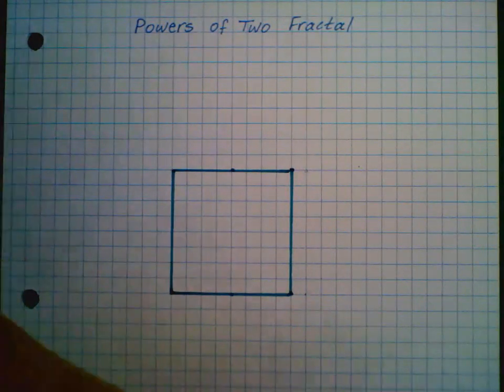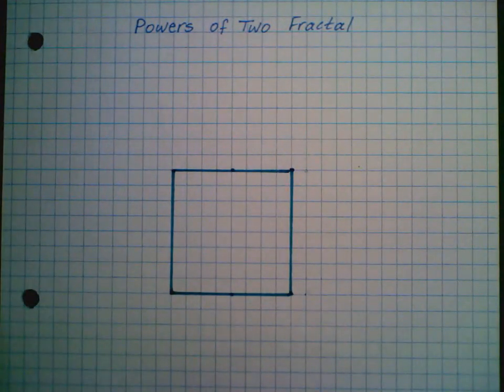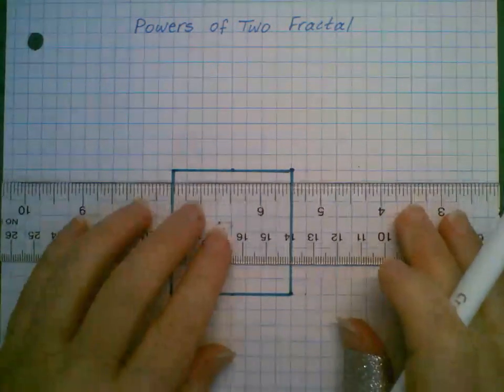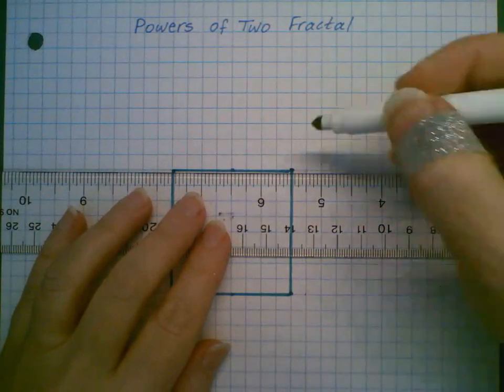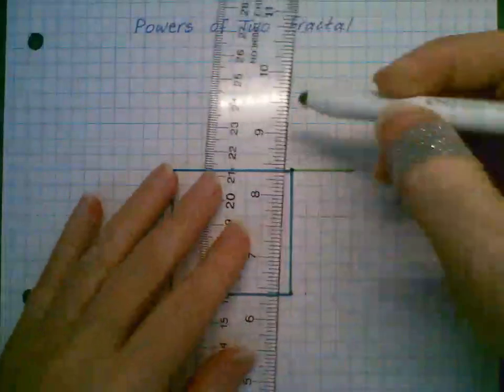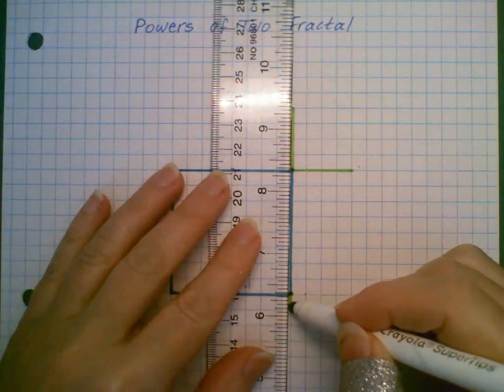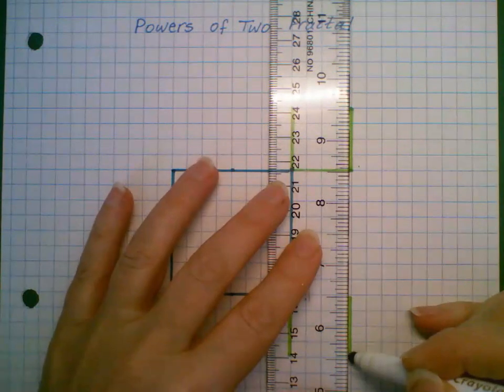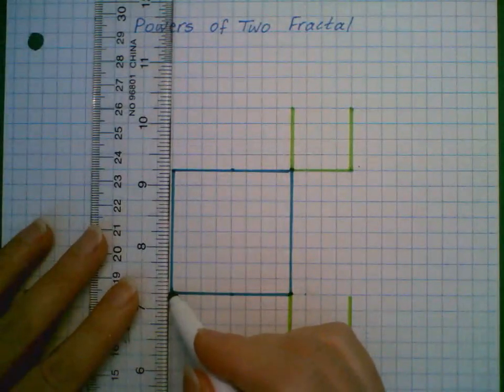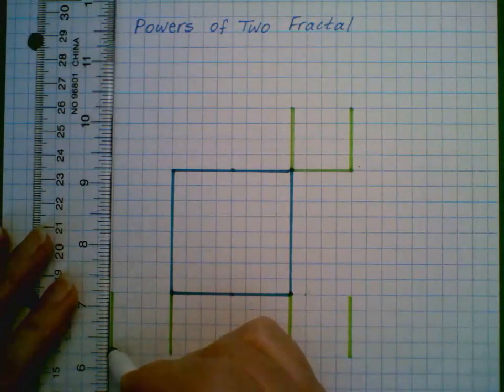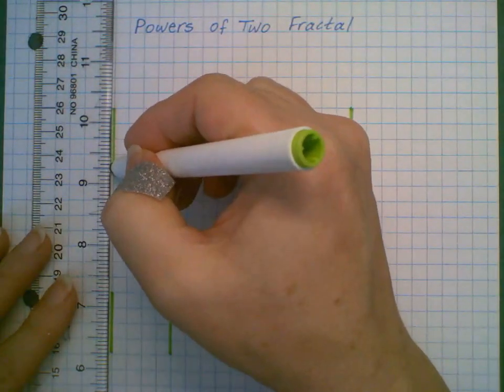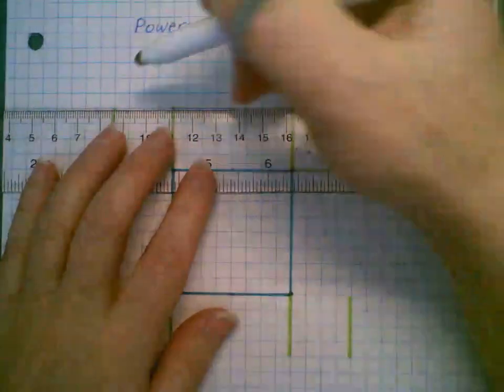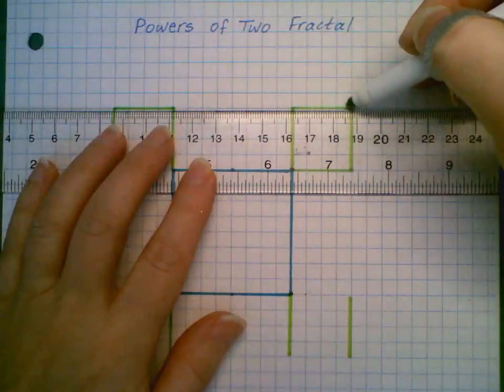And then off of each vertex, that means each corner, I'm going to make another square whose dimensions are half the size. So instead of eight by eight, I'm going to be making a four by four coming off of each of the corners. Once you get the hang of it, you can do a couple at a time.